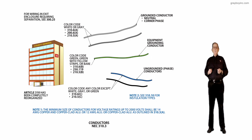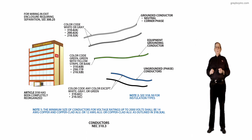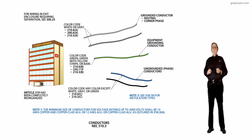A revision was made to clarify that the minimum size of conductors for voltage ratings up to and including 2,000 volts should be number 14 AWG copper and copper clad aluminum, or 12 AWG aluminum or copper clad, except as permitted elsewhere in the National Electrical Code.